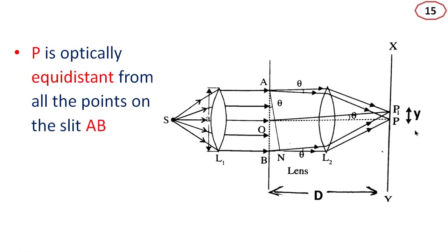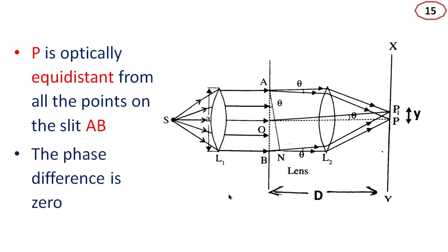The geometrical distance from all the points of the slit AB to P is not the same. But the optical path from all the points of the slit AB to P is the same, because light needs to travel through the lens as well, and the medium's refractive index is different. So P is optically equidistant from all the points on the slit AB, and therefore the phase difference is 0.